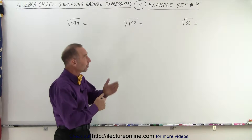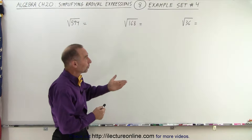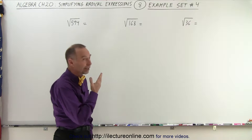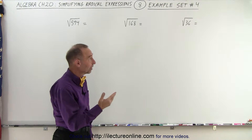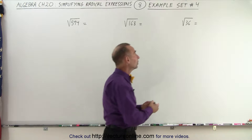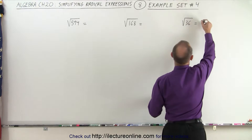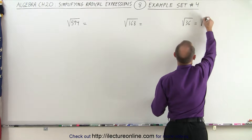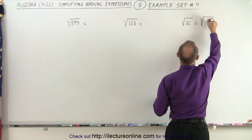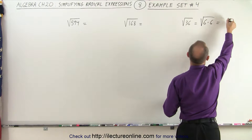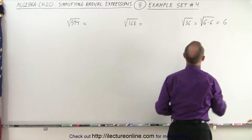For example, the number 36 — you realize that's actually 6 times 6, and so this can be written as the square root of 6 times 6, and therefore this is equal to 6.